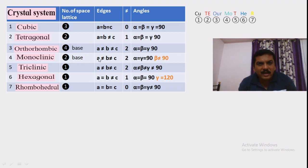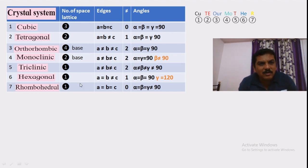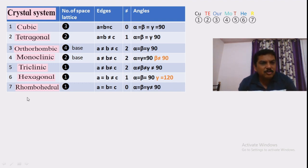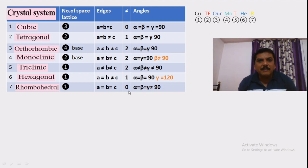In monoclinic, a ≠ b ≠ c — two unequal signs are present. In triclinic also, two unequal signs: a ≠ b ≠ c. In hexagonal, a = b but b ≠ c, so one unequal sign is present. In rhombohedral, a = b = c, and no unequal sign is present.